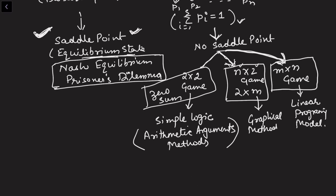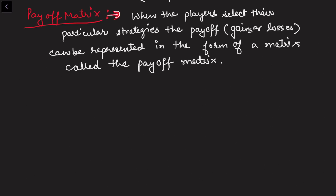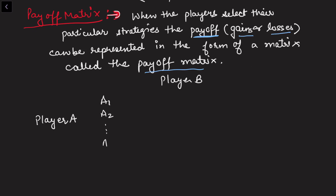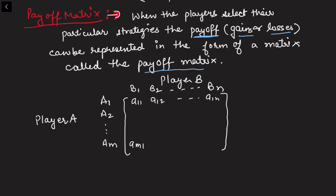Before moving to a particular example, let me define another terminology: the payoff matrix. The payoff matrix is when the player selects their particular strategy; the gains or losses can be represented in the form of a matrix called the payoff matrix. Let me write player A on the left and player B on top. Player A has m strategies and player B has n strategies, with entries a11, a12, up to a1n, and so on to am1 through amn.